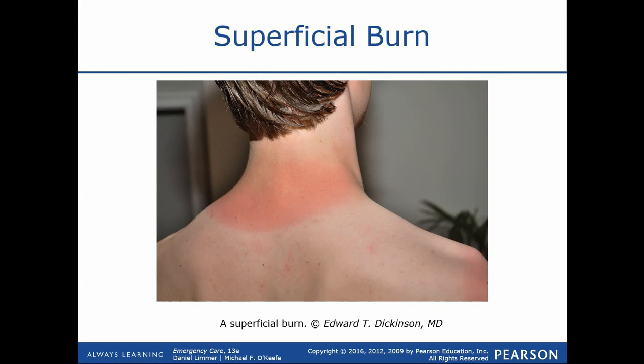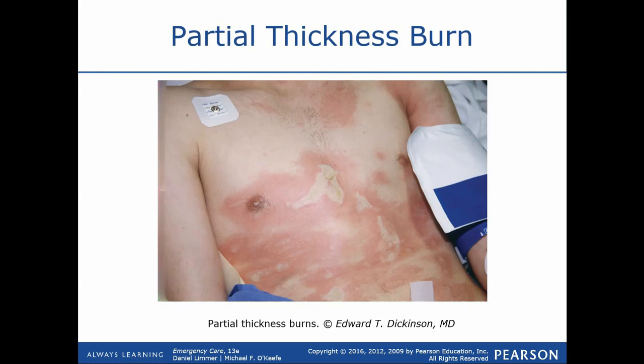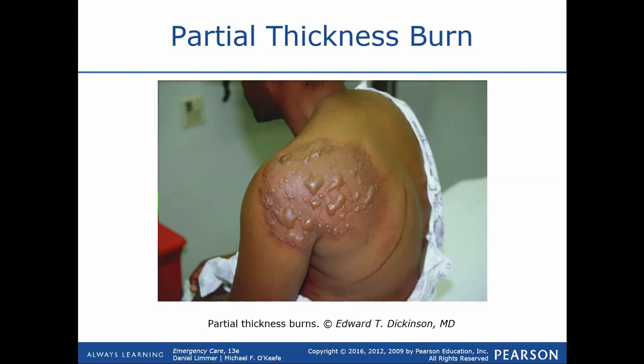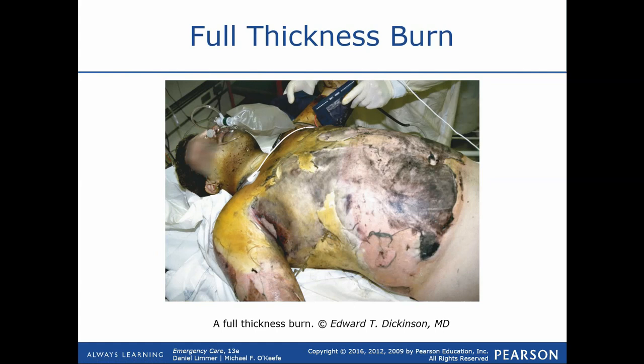Identifying the types of burns is important, but also identifying the surface area — we'll talk about how to do that with the rule of nines. Here's a picture of a first-degree burn, which is probably just a sunburn. Here's a partial thickness or second-degree burn where we start to get blisters involved, and here's another second-degree burn that's a bit more profound. And here's a third-degree burn where we're actually seeing substantial amounts of skin removed and burned all the way through.